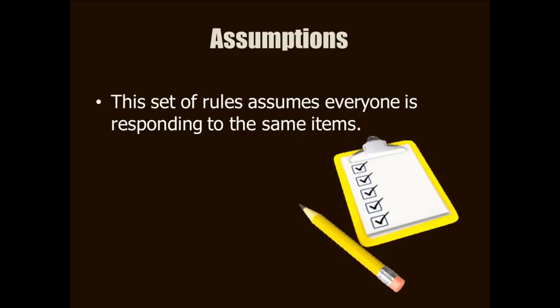If you have missing responses, you have to come up with a rule. You might decide not to calculate a score for them, or you might decide to average the scores on the items they did respond to and then multiply by the total number of items. This could be problematic because all items are not created equal. That's why researchers go to a lot of trouble to get complete responses to a scale.